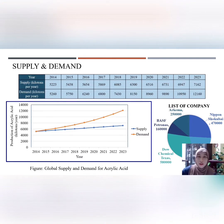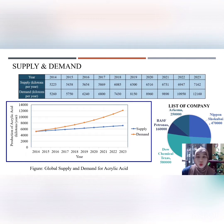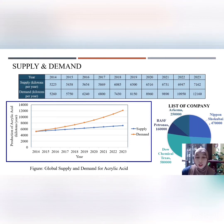One of the main factors driving increasing global demand is superabsorbent polymer in the personal care industry. The list of companies and their plant capacities includes: Arkema with 250,000 tons, Nippon Shokubai with 470,000 tons, BASF Petronas with 160,000 tons, Dow Chemical with 480,000 tons, and LG Chem with 353,000 tons.